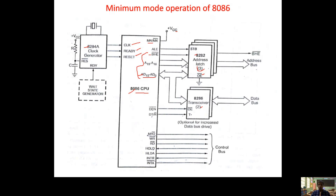Based on these three latches we get pure address lines A0 to A19, status lines S4 to S7, and BHE bar, all separated. After separating address lines into pure address lines, we get the data lines. Those data lines are transmitted to the transceivers. Because of the 16-bit data bus, we use two transceivers. The role of the transceiver is to transmit or receive 16-bit data — it acts as a mediator between the 8086 and the external device.